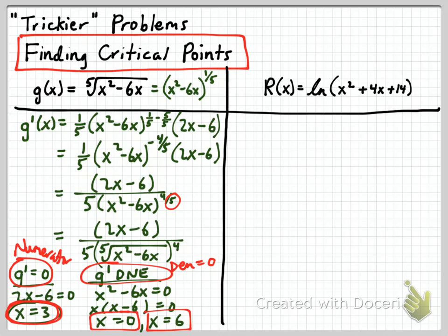Let's look at this other one. R of x. We know that r prime of x is equal to... We know that the derivative of any ln function is 1 over that stuff. x squared plus 4x plus 14. Multiplied by the derivative of what's inside, and the derivative of what's inside is 2x plus 4.